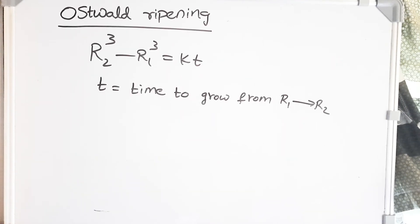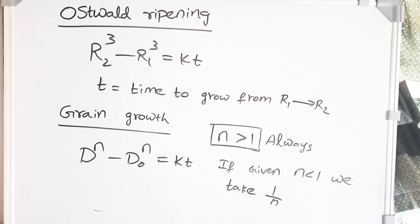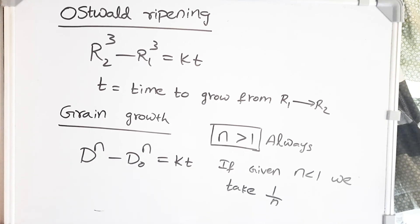Ostwald ripening coarsening is given by the formula: R2³ minus R1³ equals kT, where T is the time to grow from R1 to R2. Don't get confused with the grain growth formula, which is d^n minus d₀^n equals kT, where n is always greater than 1. In a question, if n is given as less than 1, then use 1/n in the formula.